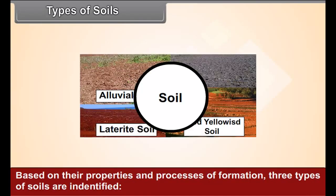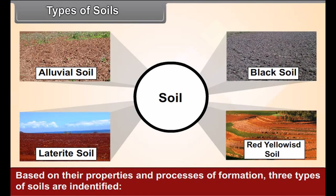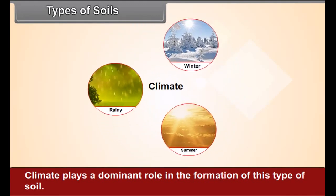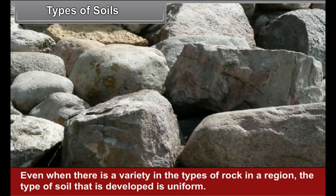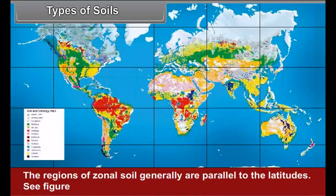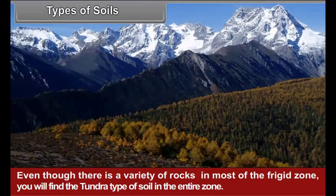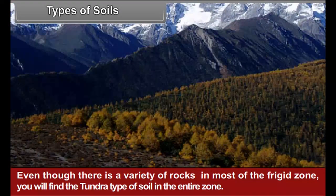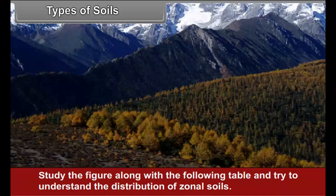Types of Soils. Based on their properties and processes of formation, three types of soils are identified. Zonal soils: climate plays a dominant role in the formation of this type of soil. Even when there is a variety in the types of rock in a region, the type of soil that develops is uniform. The regions of zonal soil are generally parallel to the latitudes. For example, even though there is a variety of rocks in most of the frigid zone, you will find the tundra type of soil throughout the entire zone.